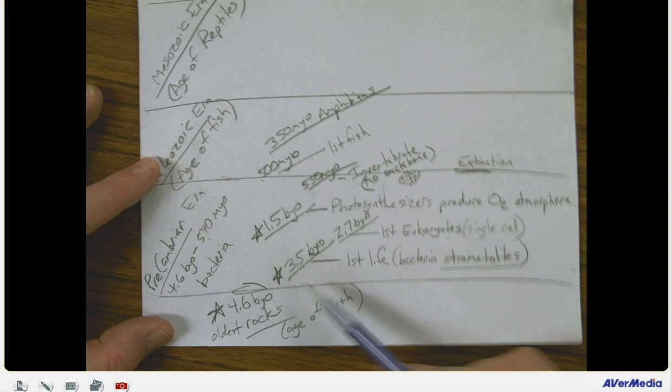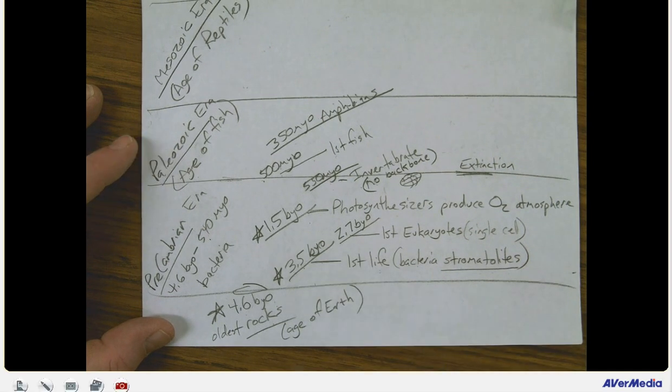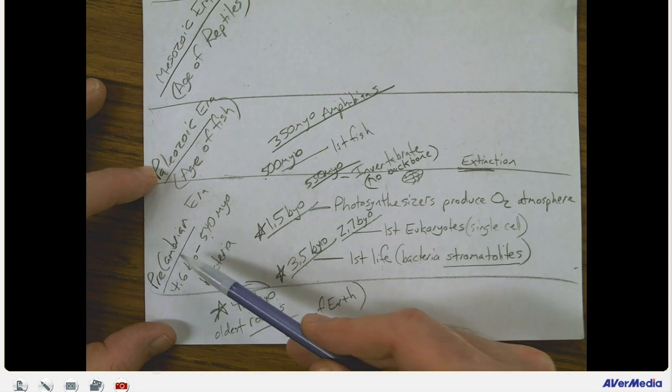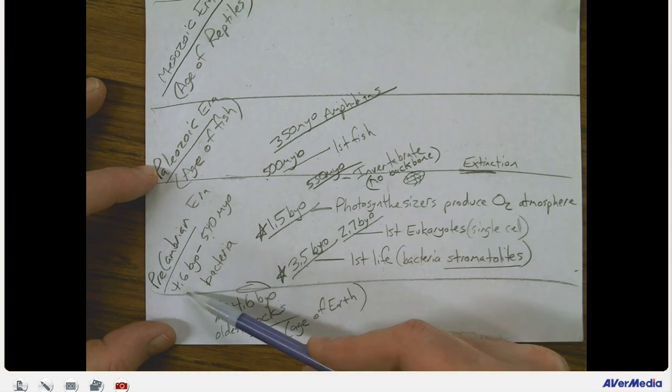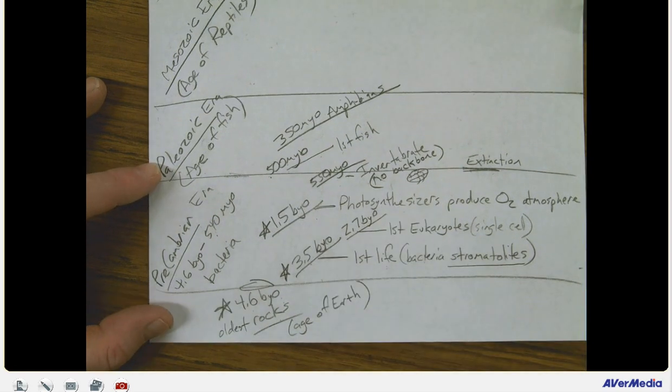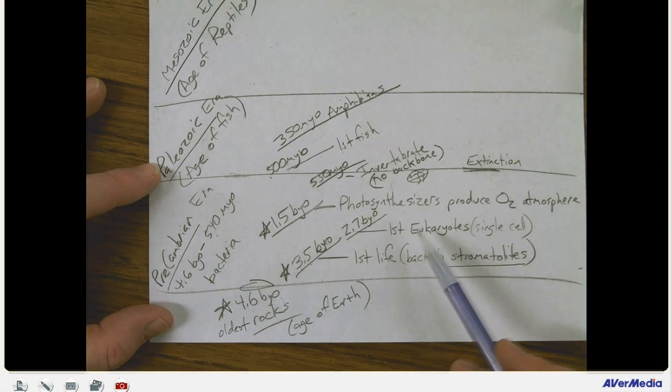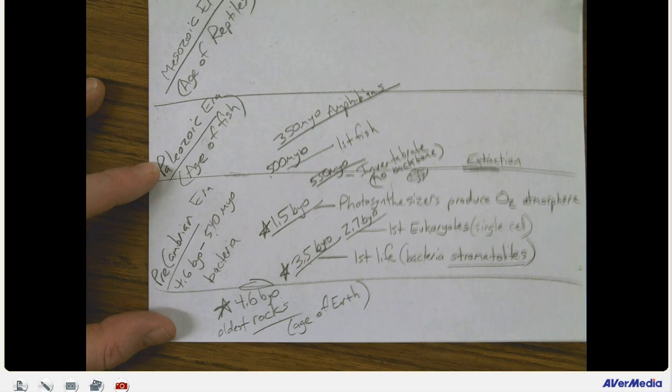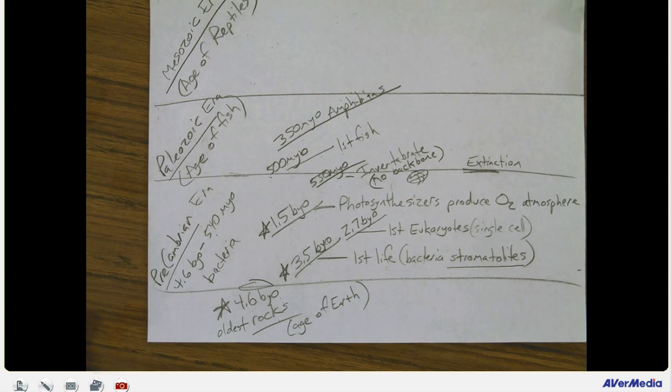At 3.5 billion years ago, we have the first life, first fossils of life. They're bacteria stromatolites. Make sure that you have a little star here. That's an important event in life during the history of time on this planet. The Precambrian is the oldest era on this planet. It goes from 4.6 billion years ago to 540 million years ago. But we decide when an era is over, and every time there's a major extinction event, we call that the end of the era. The biggest extinction in Earth's history was not the dinosaurs going extinct. It was at the end of Precambrian, and 90% of life during that time died out. It was thought that it might have been due to geologic activity, volcanoes and such things.